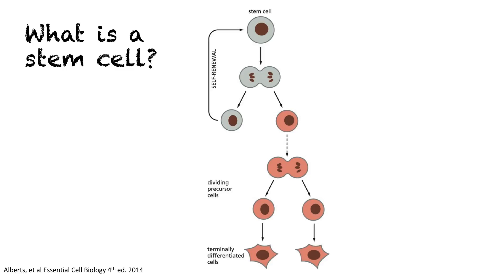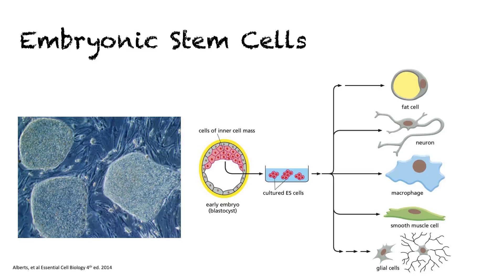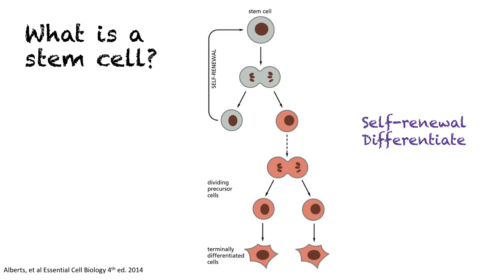Stem cells are special cells with a couple of unique characteristics. One is the ability to self-renew — they can stay in a quiescent state for quite a long time, but then they can replicate, and that replicating cell can differentiate into all the cells in the human or whatever organism we're looking at. So they have the ability to self-renew and to differentiate. These are very primitive cells.